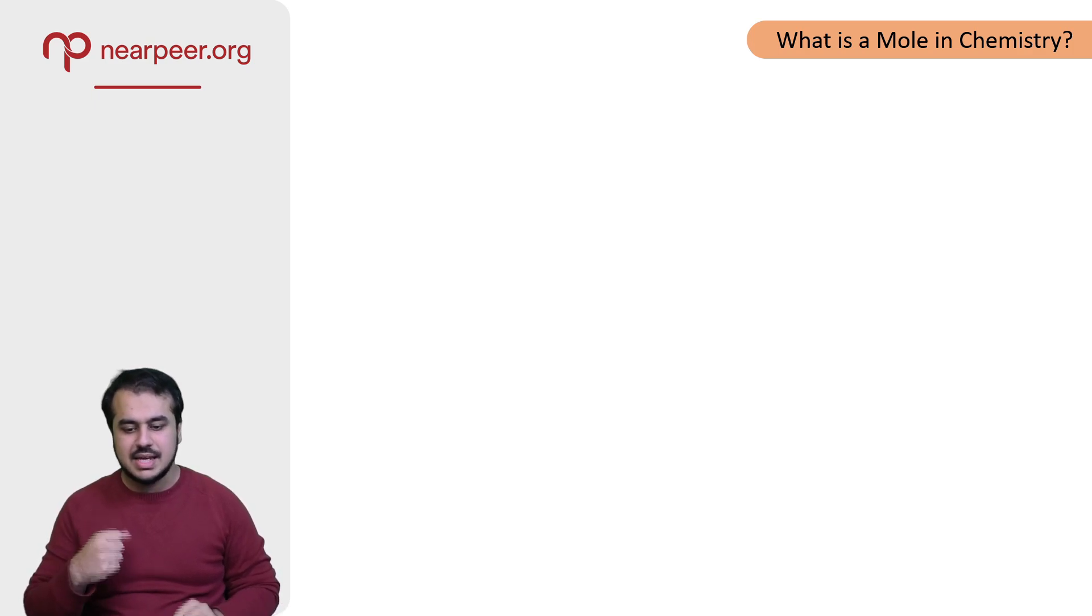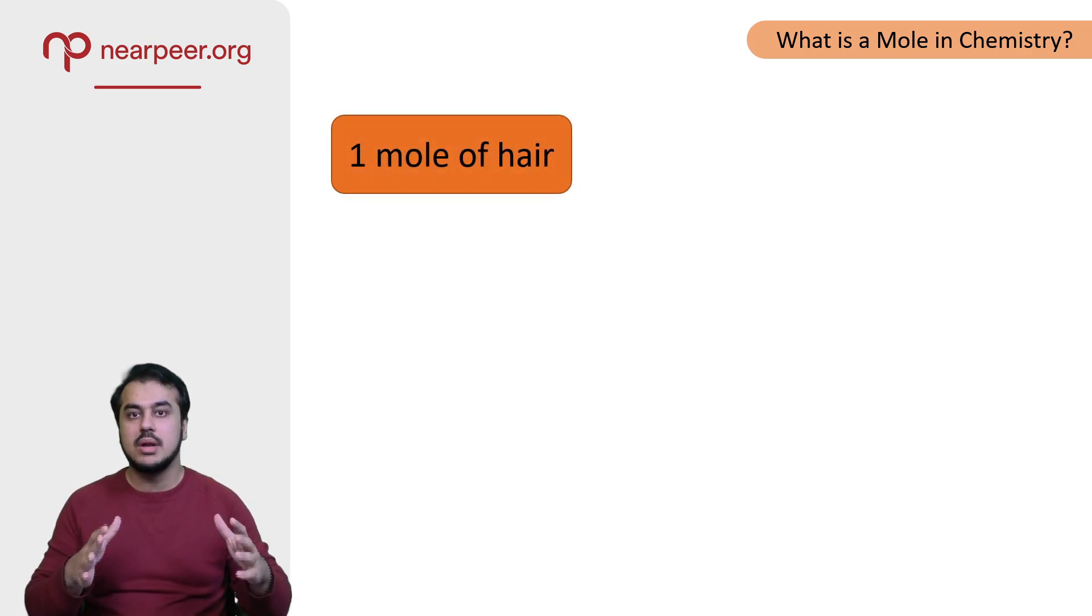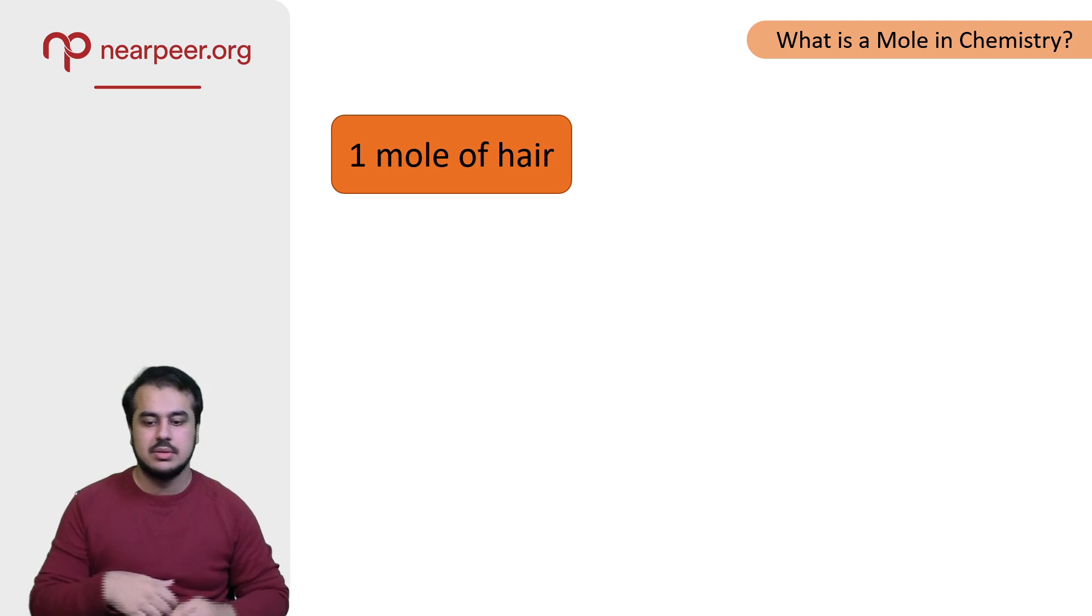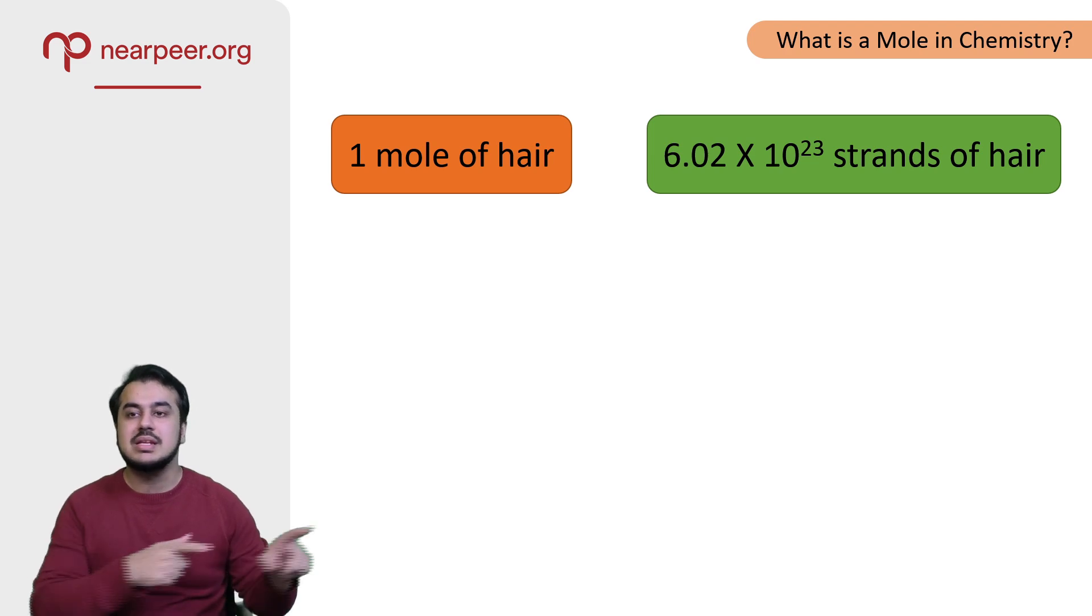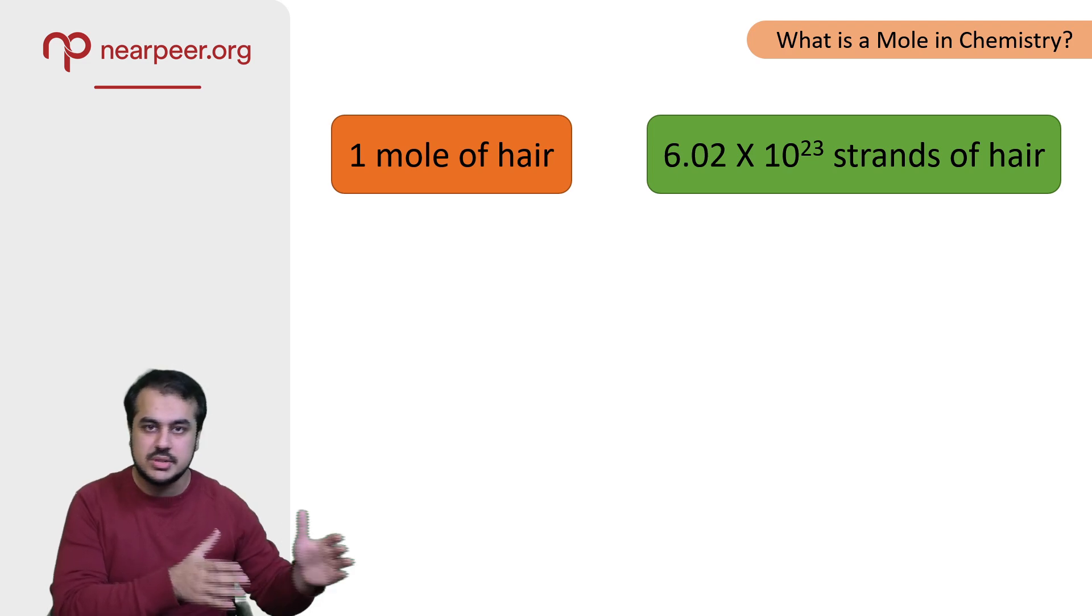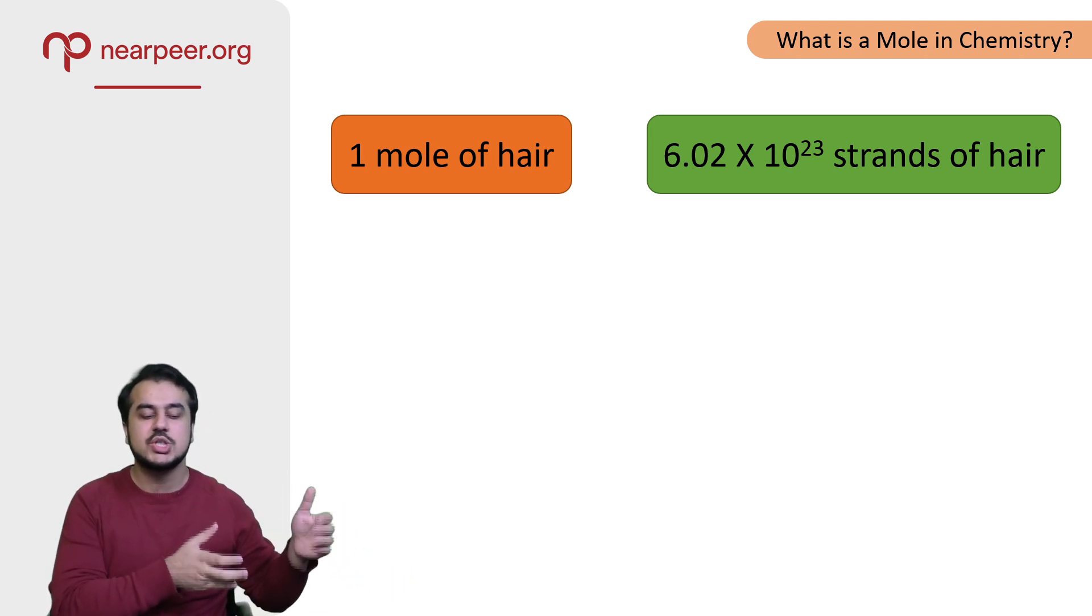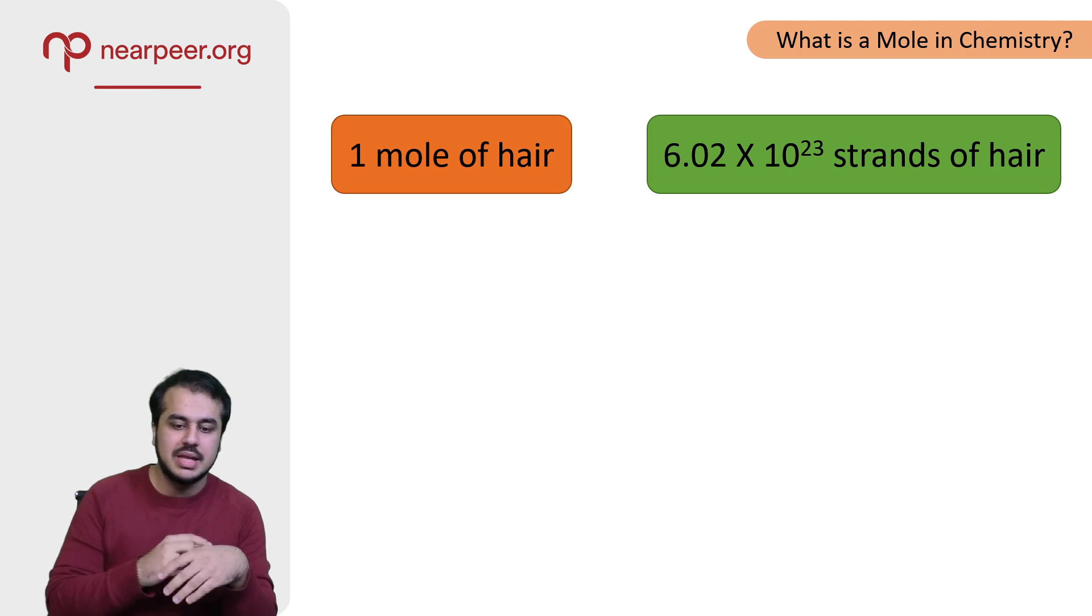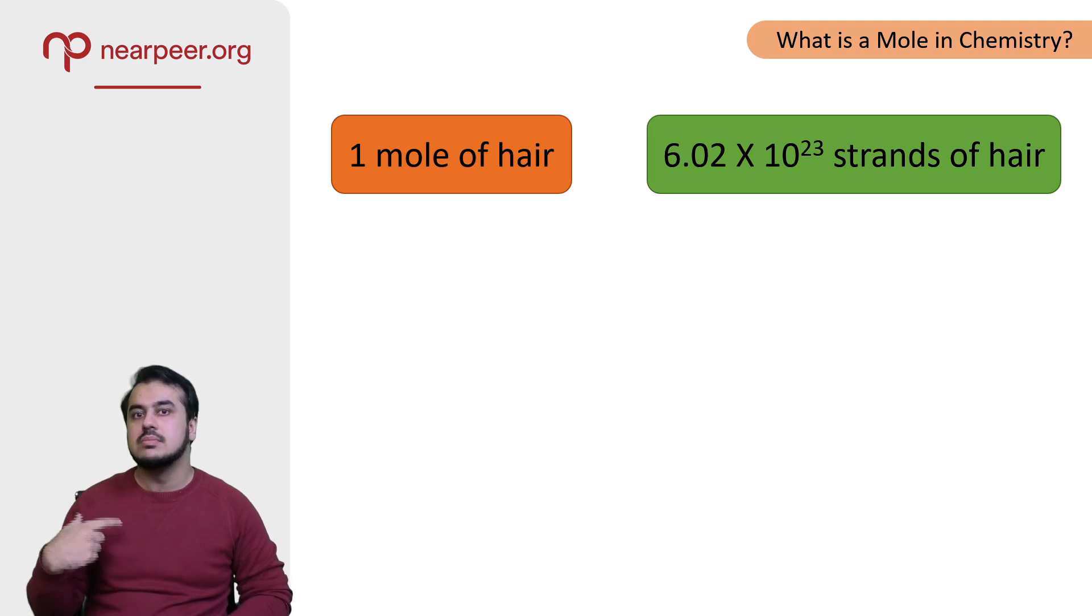So if I say I have one mole of hair, the hair on our head, I mean this many strands of hair - 6.02 times 10 to the power 23 strands of hair. Nobody actually says this because nobody actually has that many hairs on their head. But we would have atoms at such a large scale - we would have this many atoms. That's why the mole is used for atoms mostly.